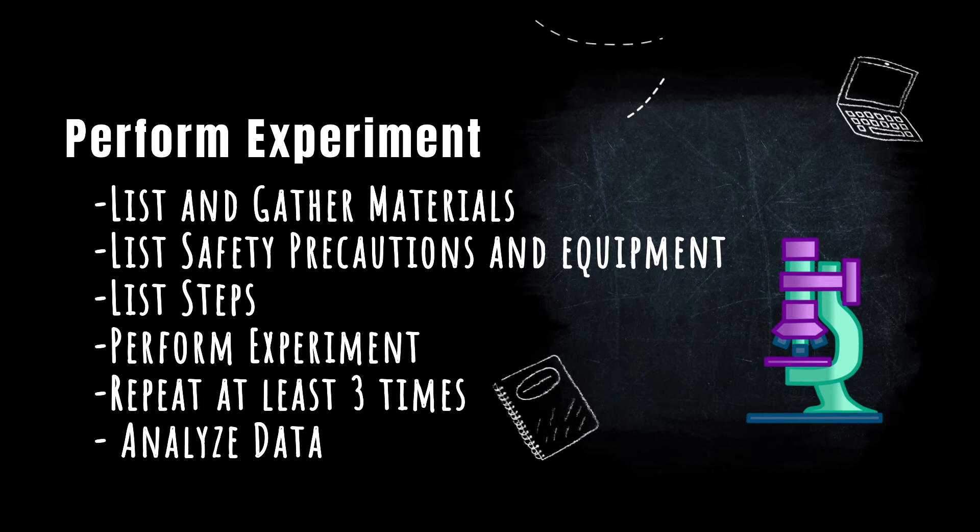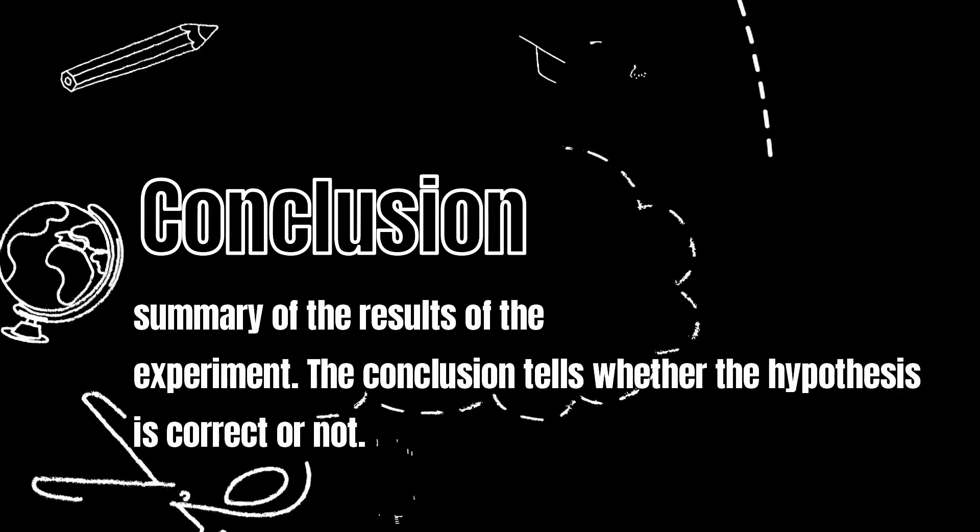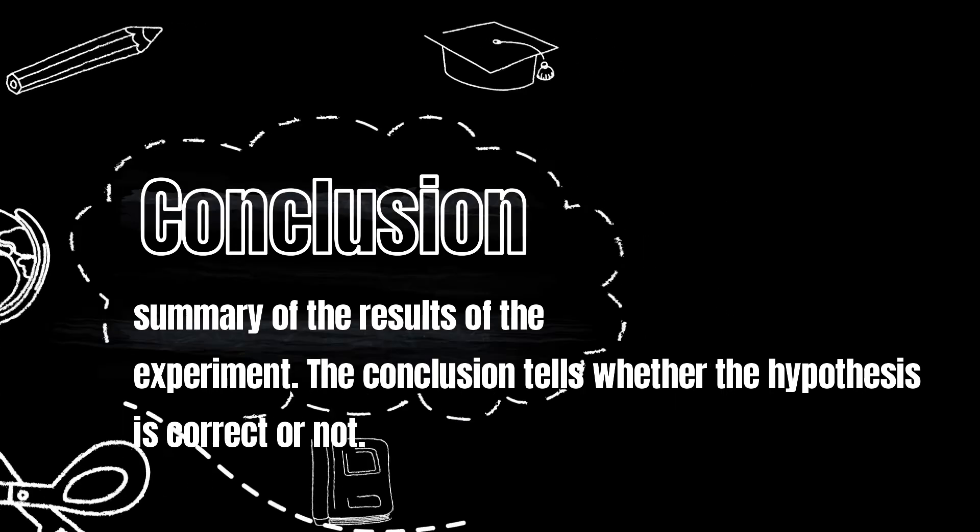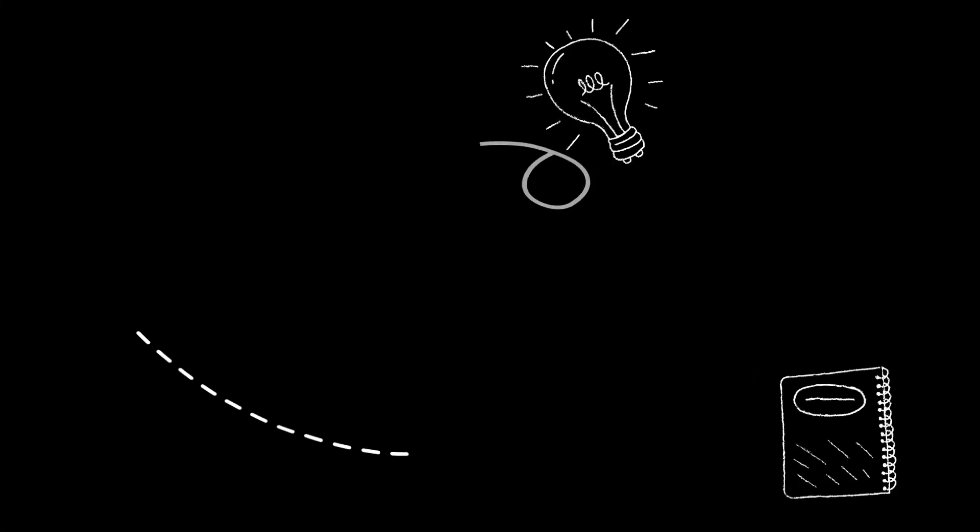The conclusion is basically a summary of the results from your experiment. The conclusion tells whether your hypothesis is correct or not. If your hypothesis was correct, then write your conclusion and move on to share your results. If your hypothesis is incorrect, then you will need to go back, change your hypothesis, and do your experiment all over again.